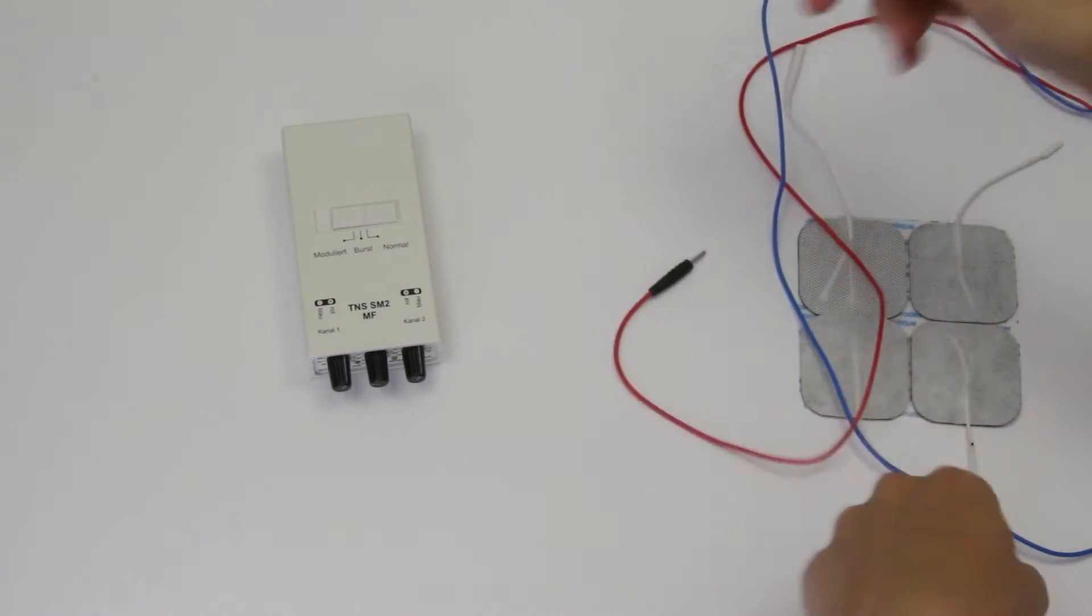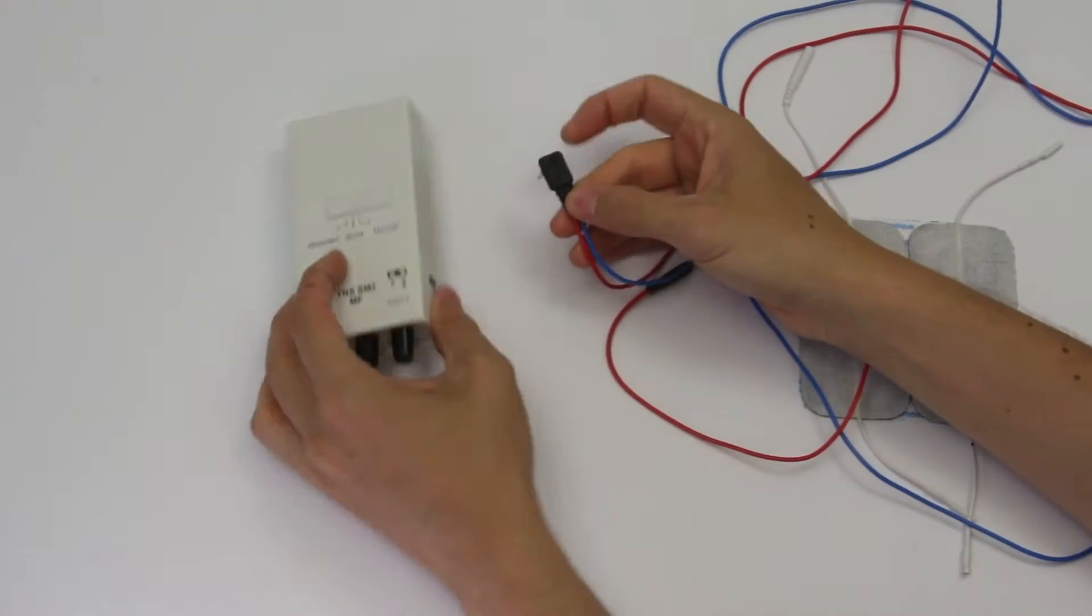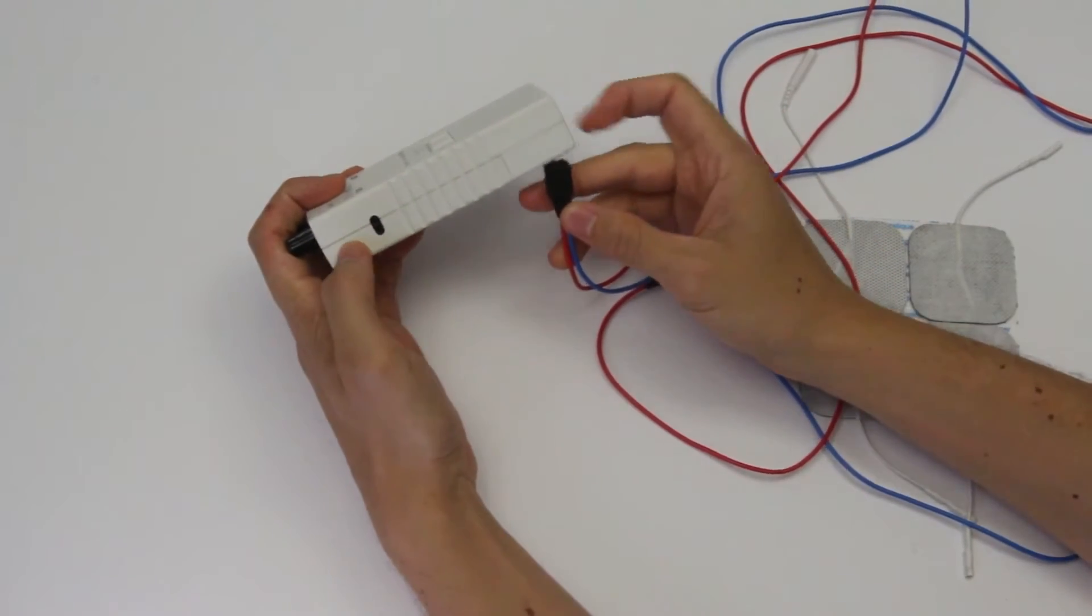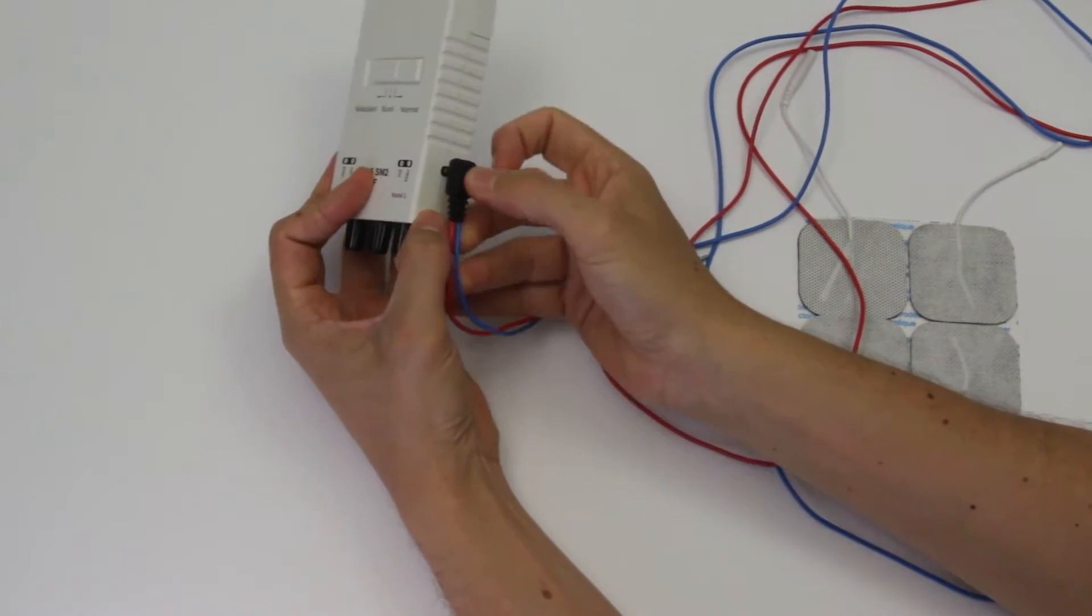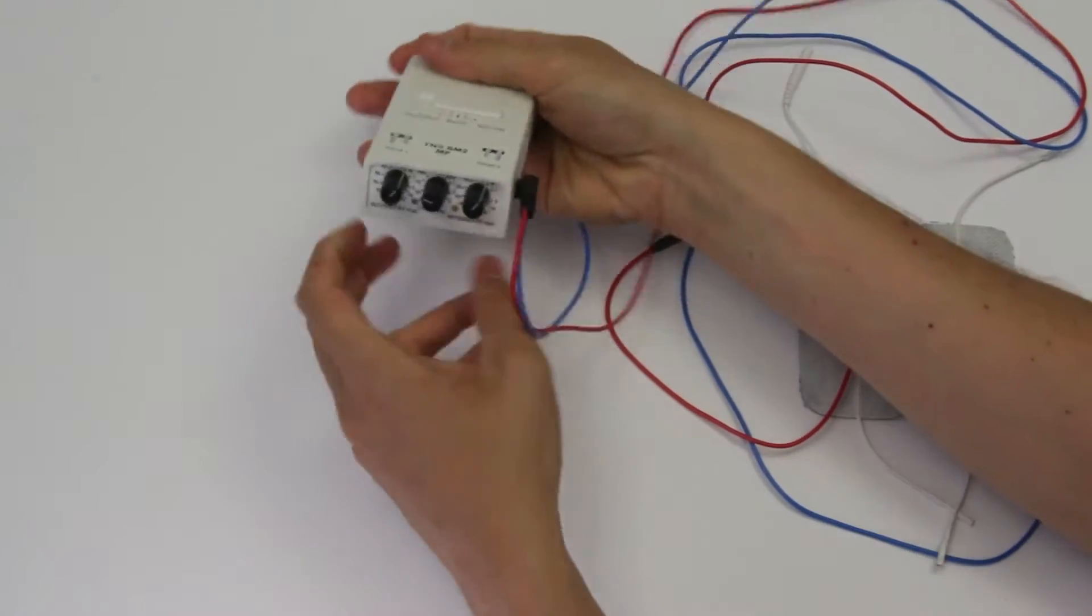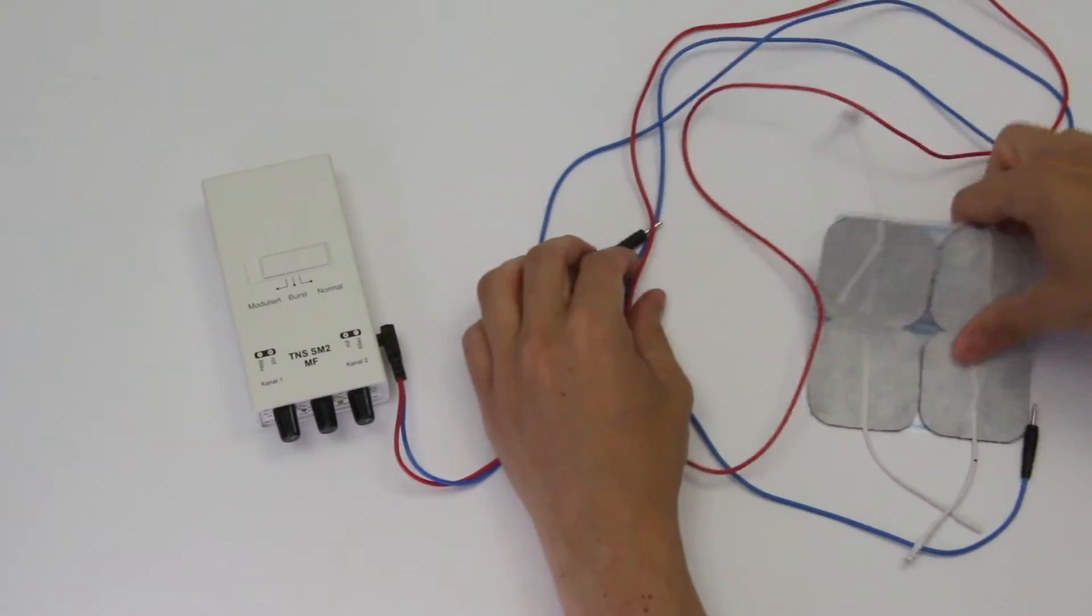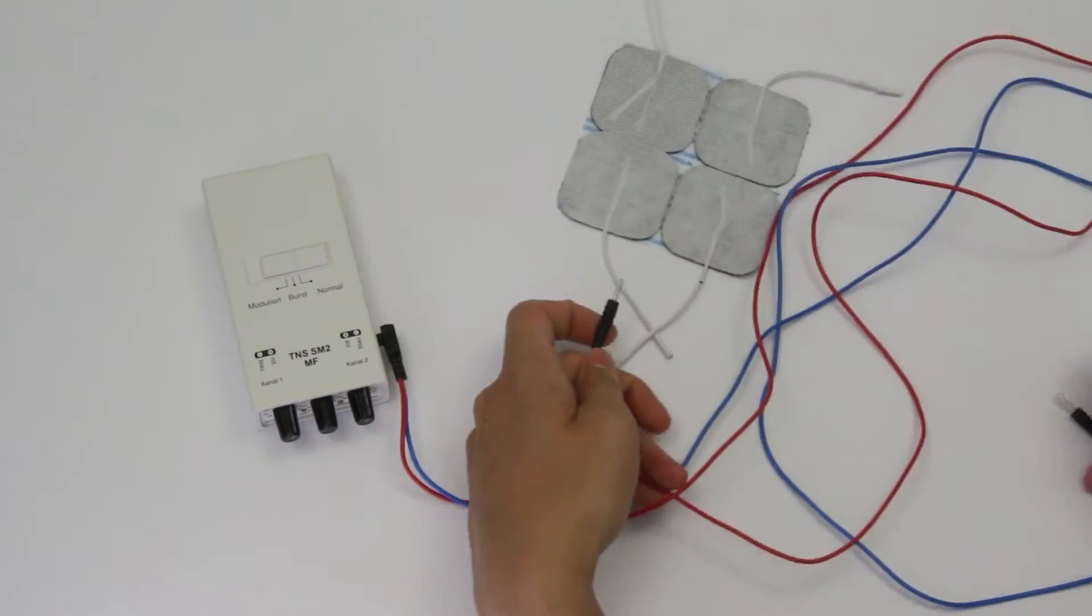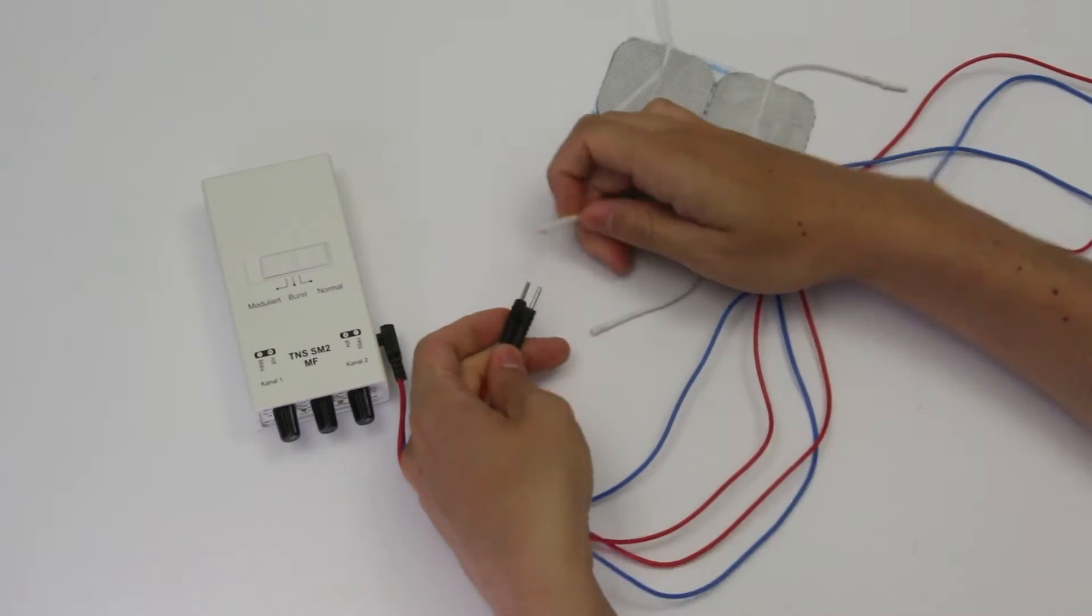Grab one of those EMS cables that you're going to connect from the machine onto the electrodes. So we plug it into one of the channels of the machine. Here I'm plugging into the rightmost channel of the machine called channel one and I'm plugging it to two electrodes.